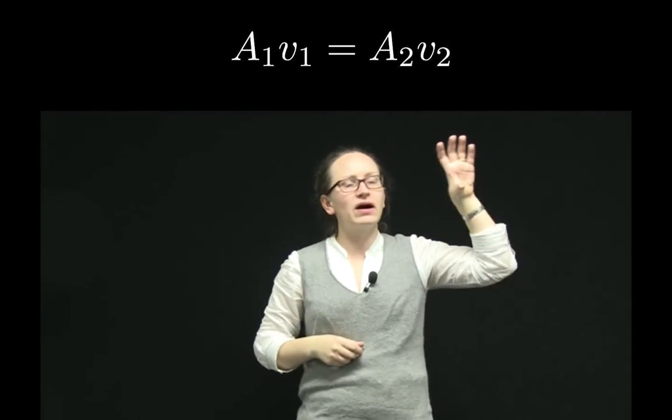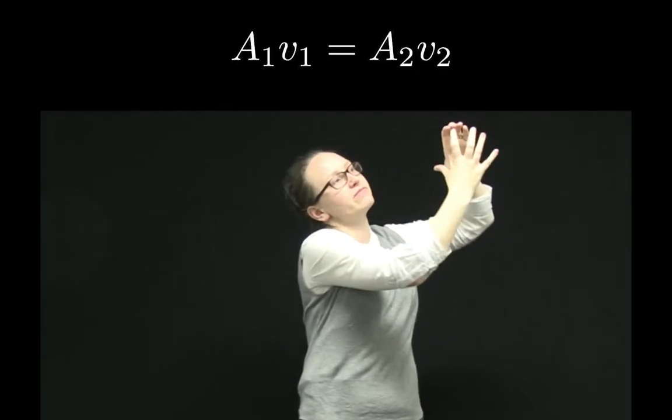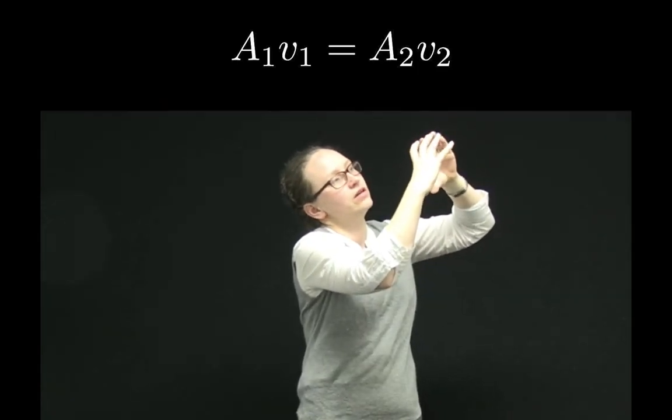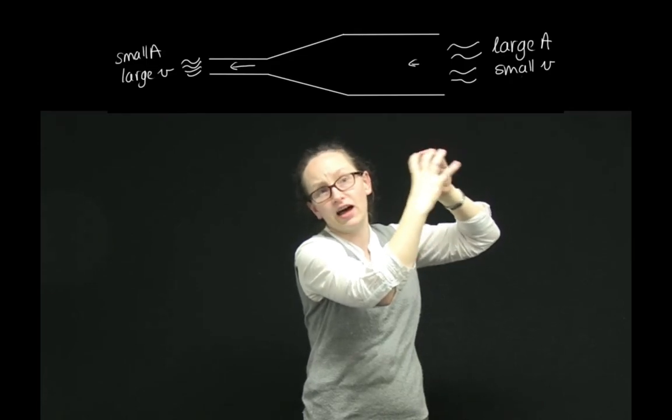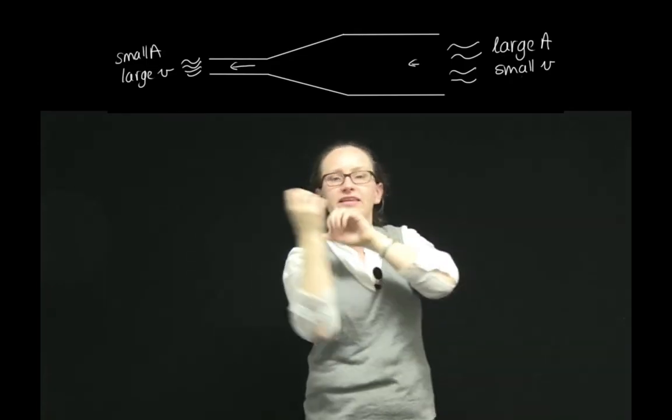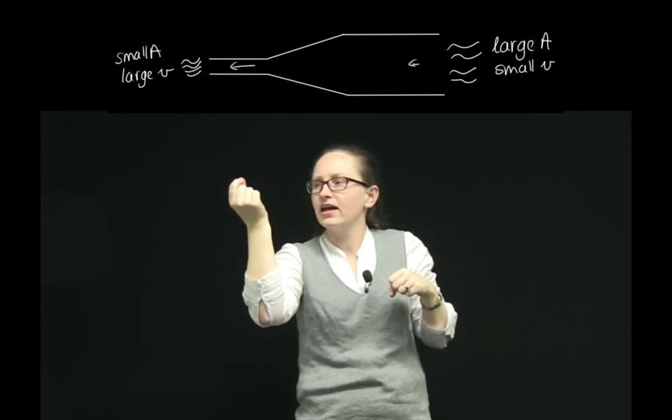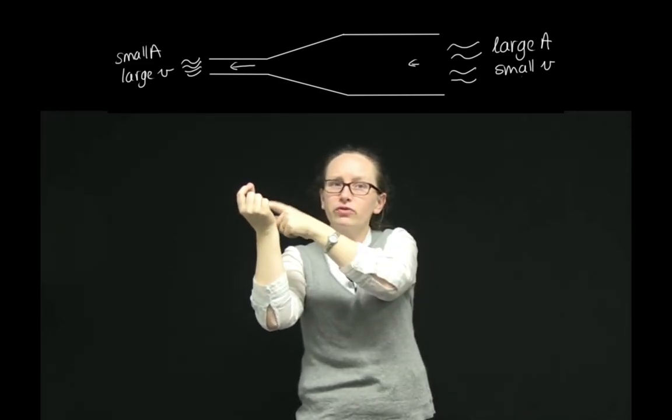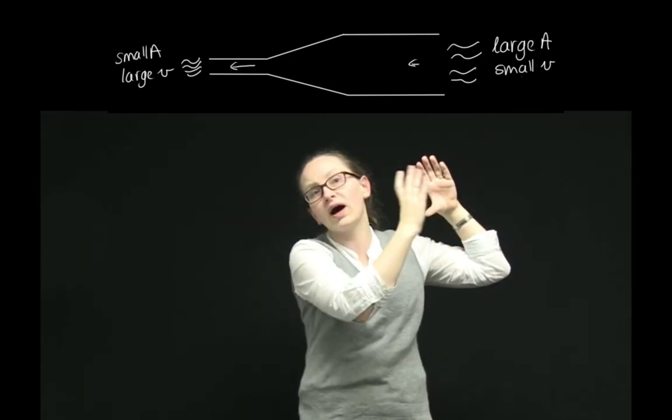So the surface area, if we have a wide end of the pipe, then this has a very large surface area. And a narrow end of the pipe has a very small cross-sectional surface area. And so the velocity must be much greater through the narrow pipe than through the wide pipe.